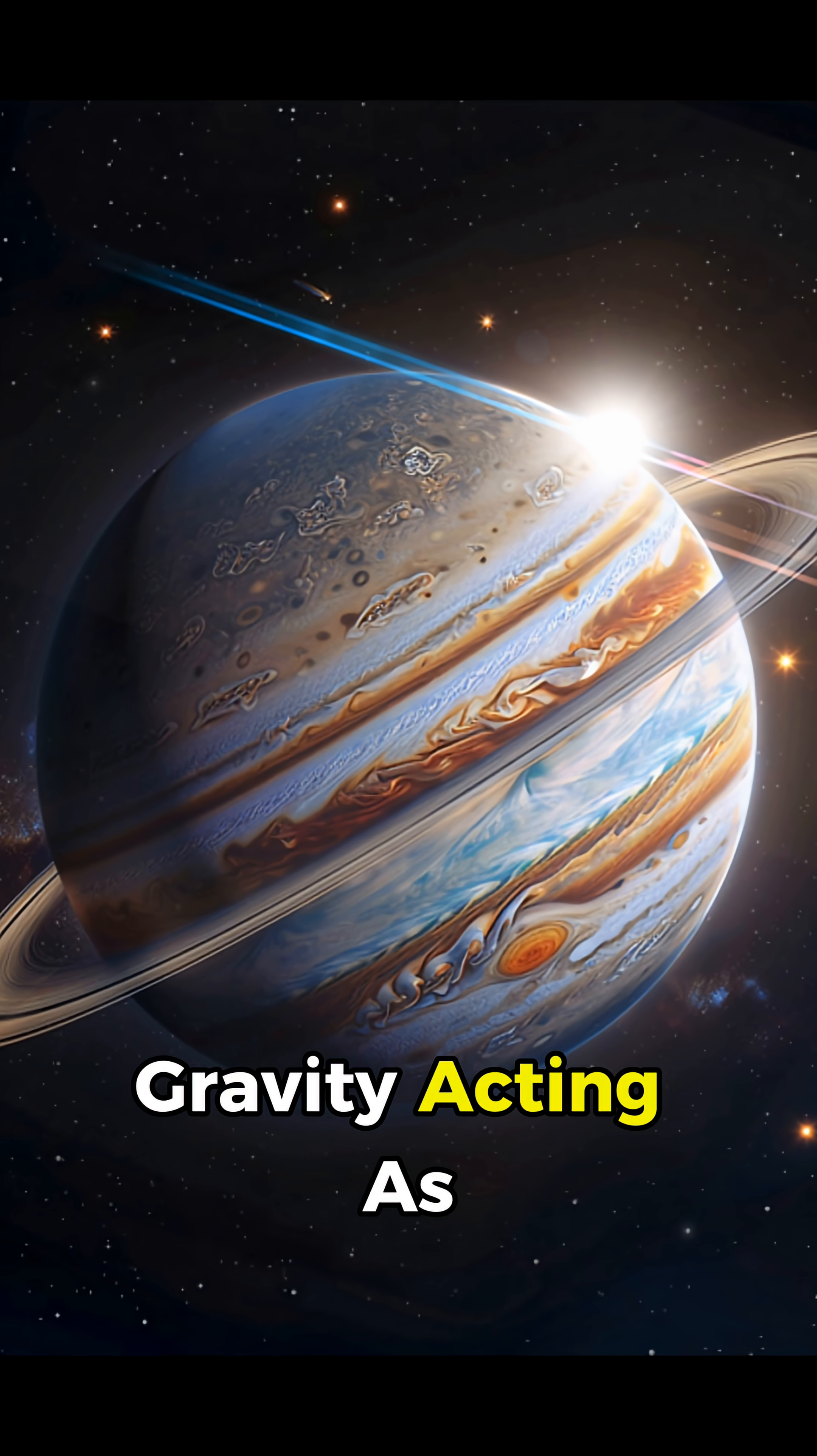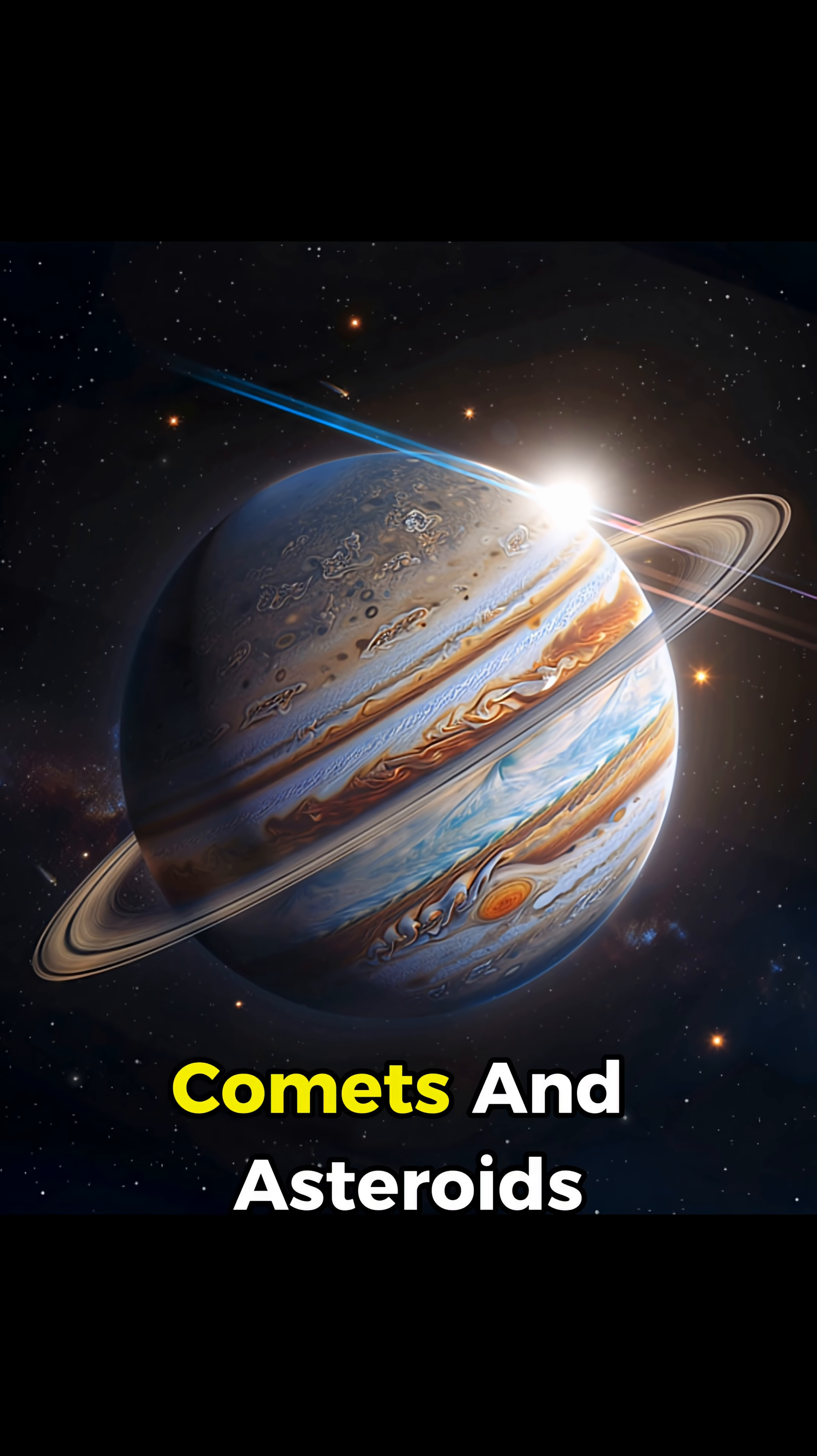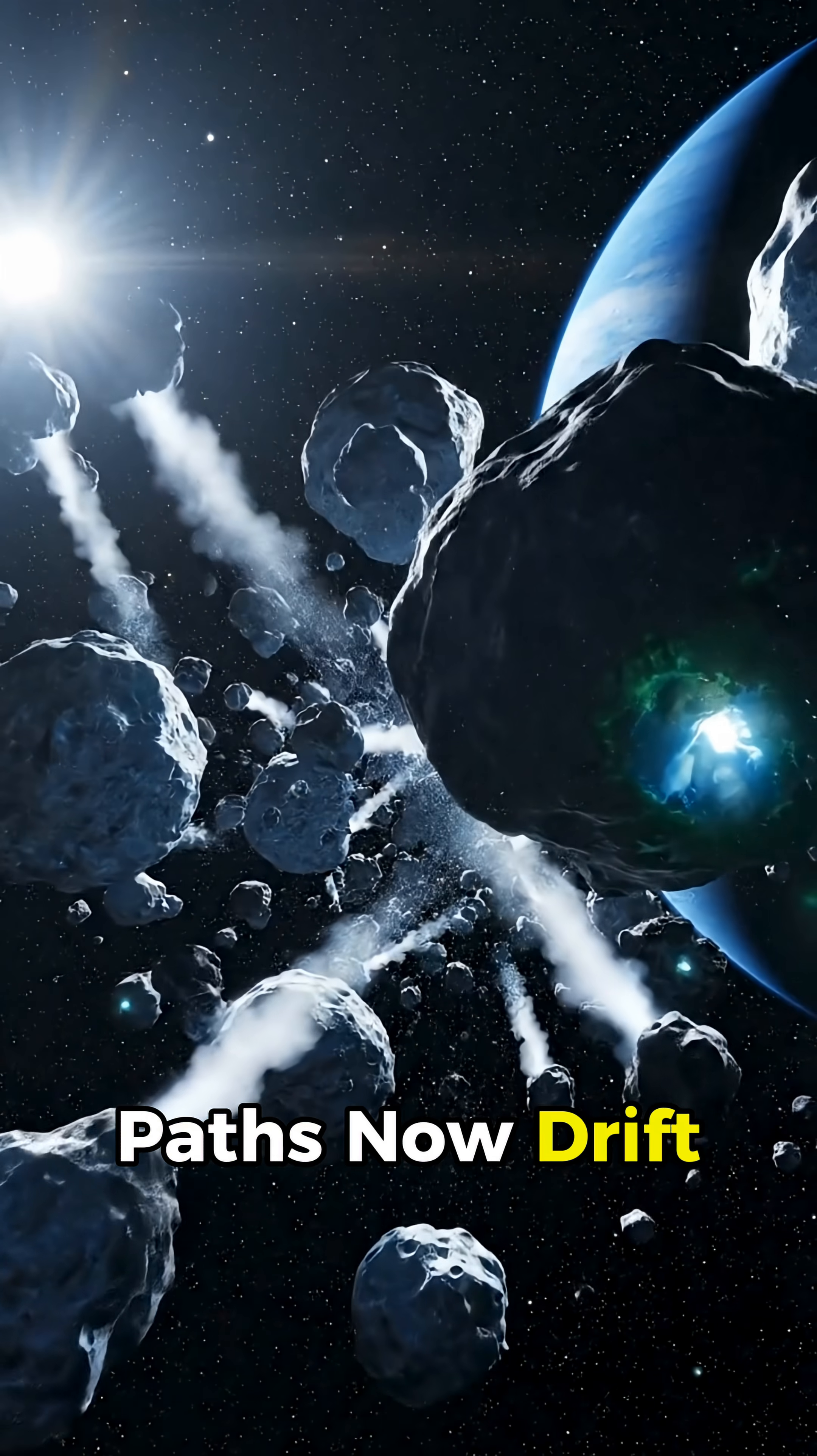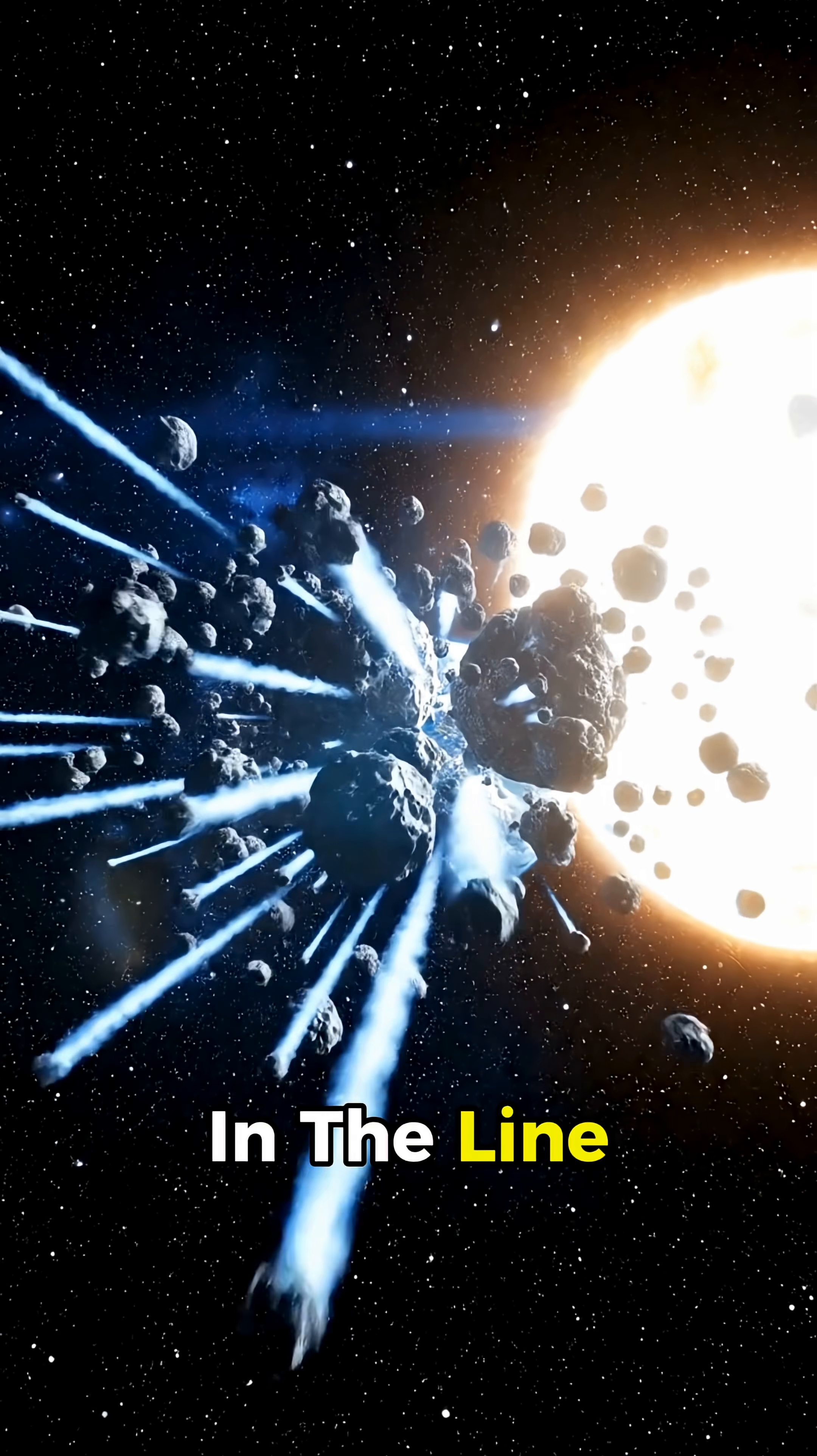Without Jupiter's massive gravity acting as a shield, the outer solar system unleashes chaos. Comets and asteroids that were once trapped in stable paths now drift freely, turning space into a cosmic shooting gallery with Earth directly in the line of fire.